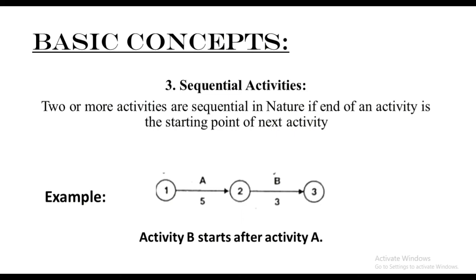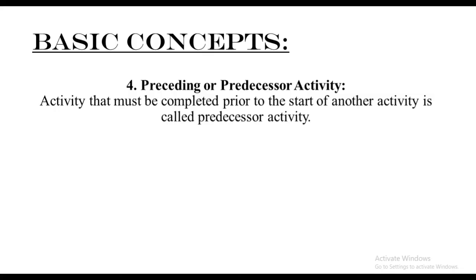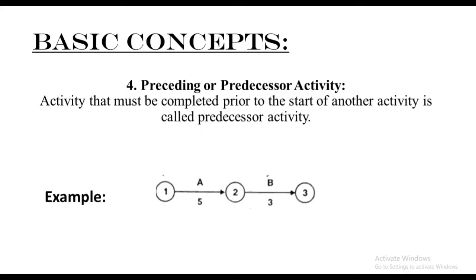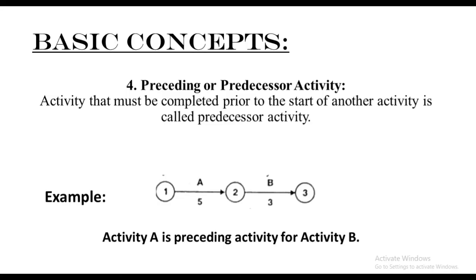Next: the preceding activity. An activity that must be completed prior to the start of another activity is called the preceding activity. In the same diagram with activity A and activity B, activity A is the preceding activity for activity B — meaning in order to start activity B, you will first need to complete activity A.